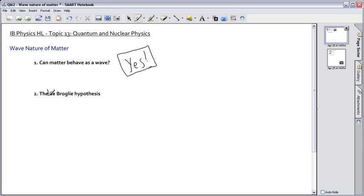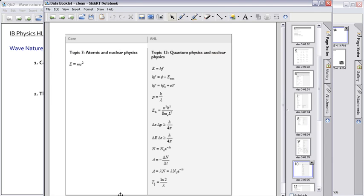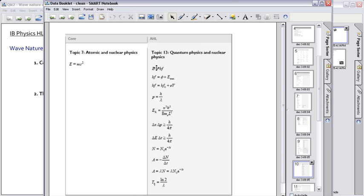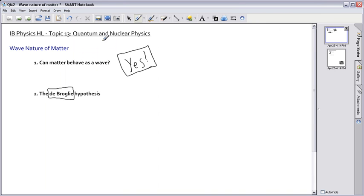So this is the de Broglie hypothesis. I'm sure I'm pronouncing it wrong, but in any case, I can look it up in our equation booklet. We've already talked about these first three equations, so the fourth one is P equals H over lambda. So I'll write that down, maybe I should do it in red instead, so P equals H over lambda.